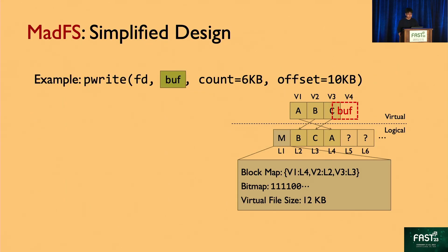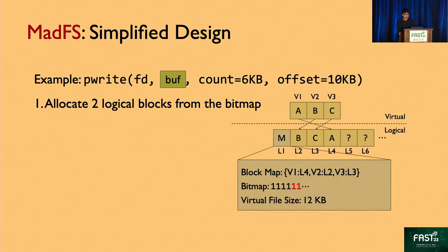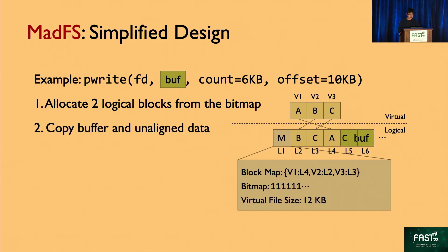Now let's take a look at how write works in this simplified design of MetaFS. Here we want to write six kilobytes of buffer to the middle of block C, which involves copy-on-write for virtual block 3 and append for virtual block 4. We first allocate two logical blocks from the embedded bitmap by marking the bits for logical blocks 5 and 6. Then we copy the buffer to the newly allocated blocks. We also need to copy the first two kilobytes of block C, since we are doing copy-on-write for strong data crash consistency.